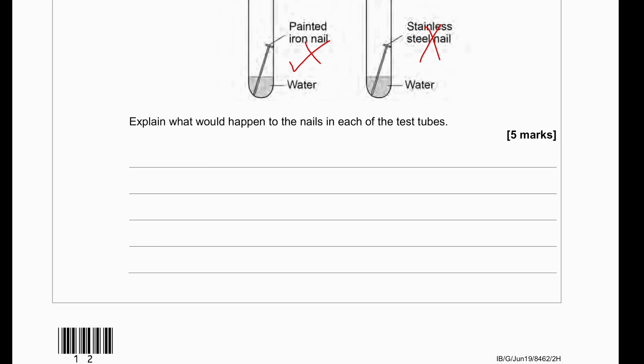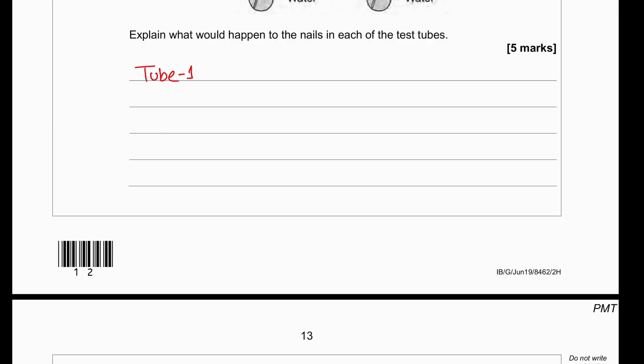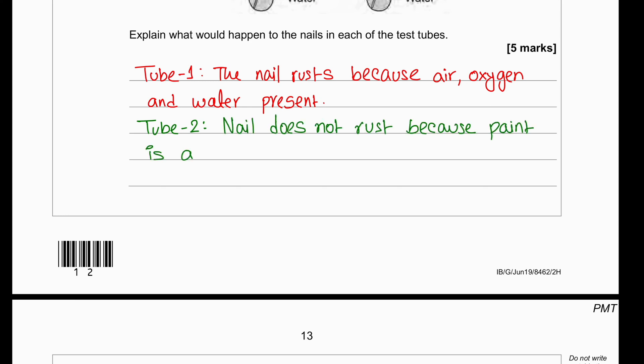So, then what would happen to the nails in each of the test tube? So, the answer can be written like this. Nail one will rust because air and oxygen and water are present. The nail two does not rust because no water. Nail three does not rust because there is no air or oxygen.